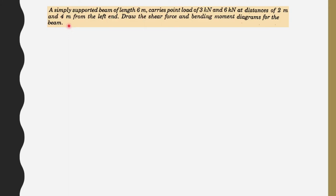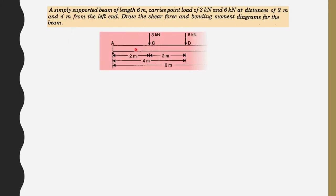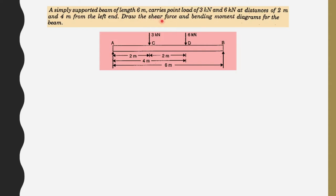The simply supported beam is 6 meters in length having two point loads — one of 3 kilonewton and one of 6 kilonewton — acting at 2 meters and 4 meters from the left end. The left end is point A and the right end is point B. From A, 2 meters gives the 3kN load and 4 meters gives the 6kN load. Find the shear force and bending moment diagram for this beam.